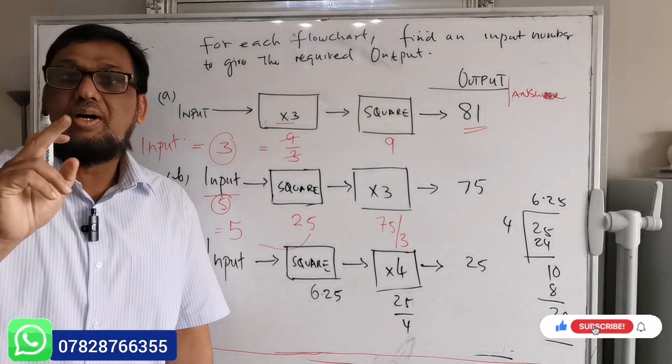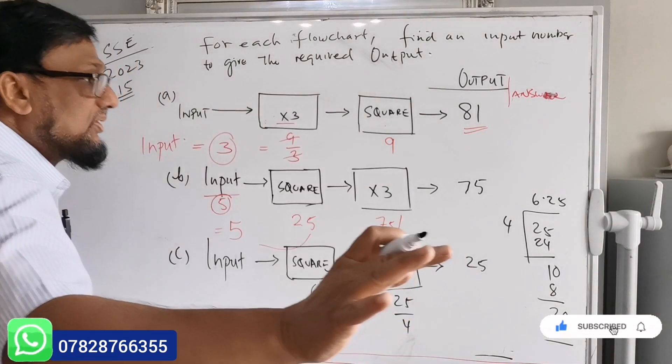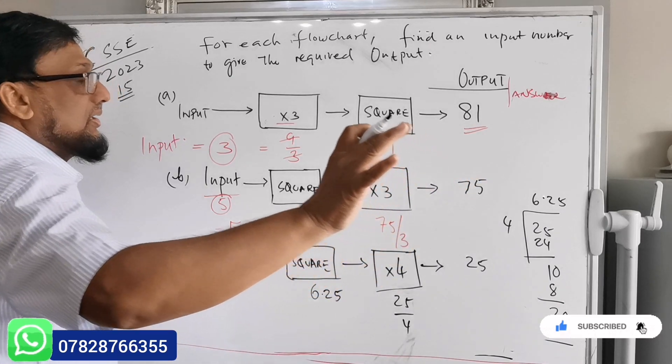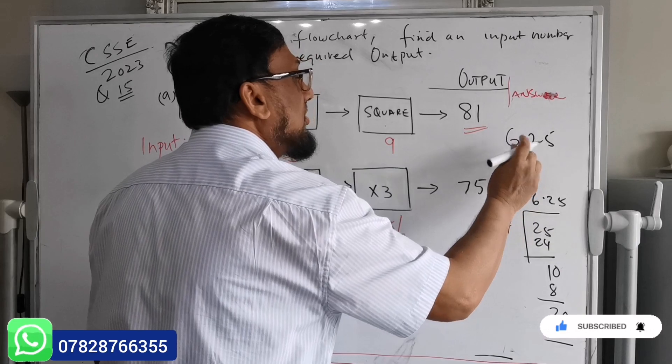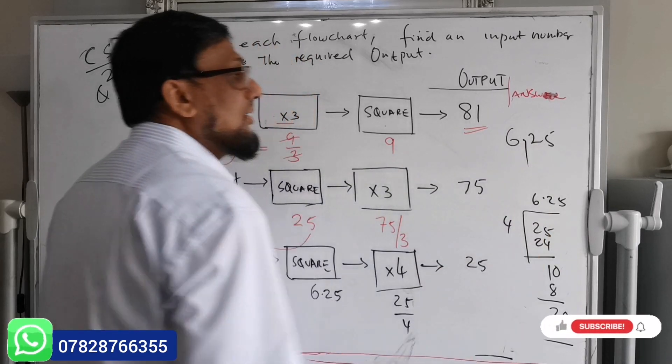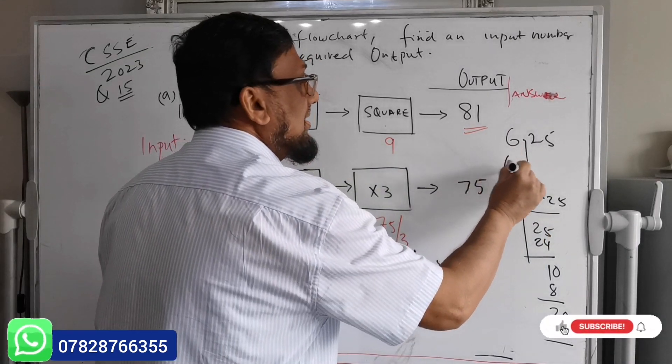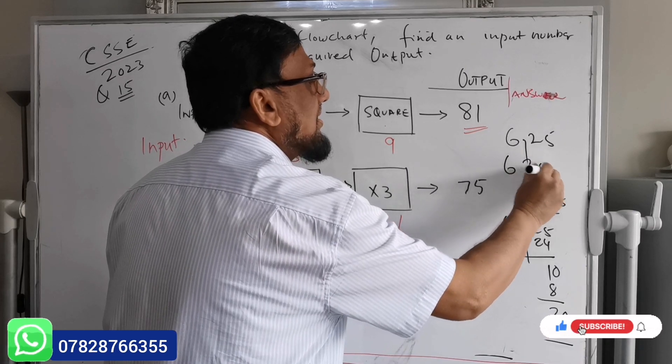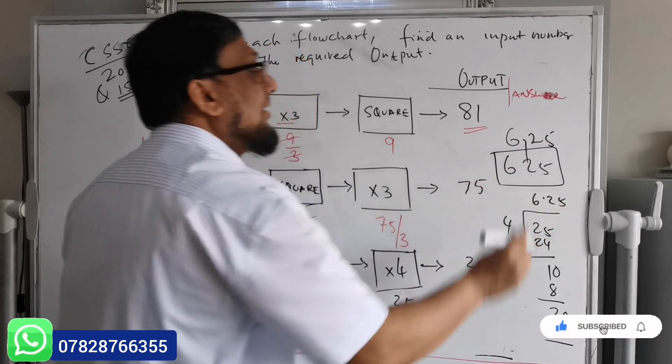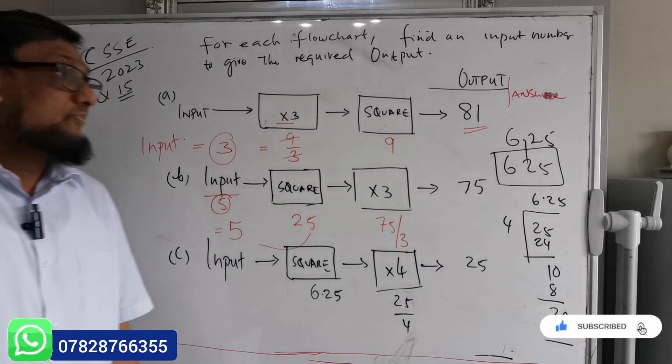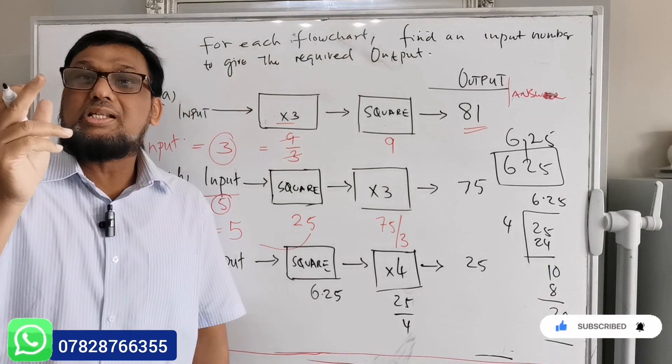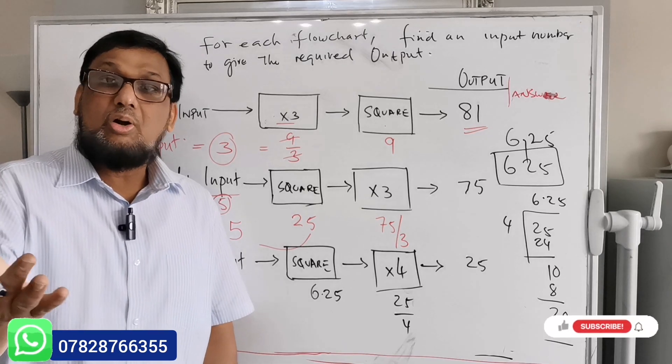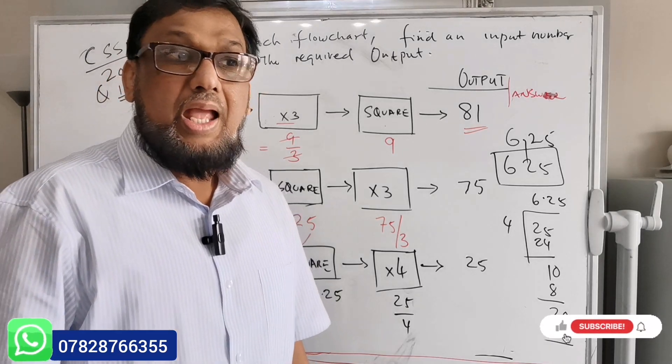So this number will be 6.25. Hang on a second, 6.25. If I remove the decimal, what's the number here? 625. If you are my student you know I asked you to learn the square numbers.